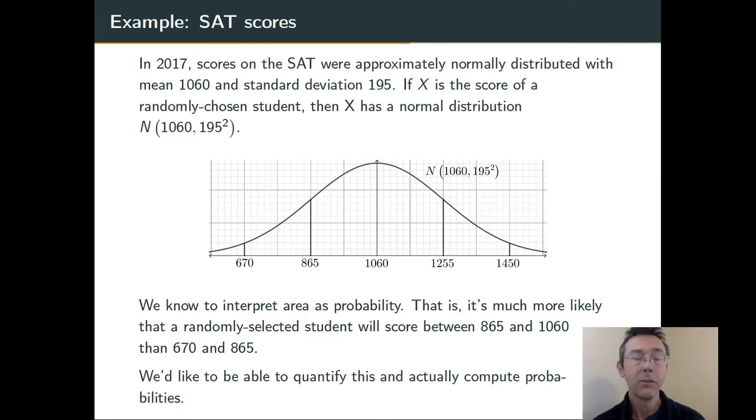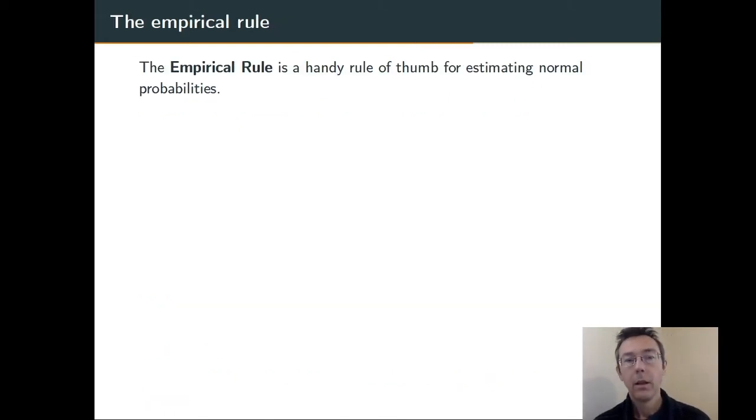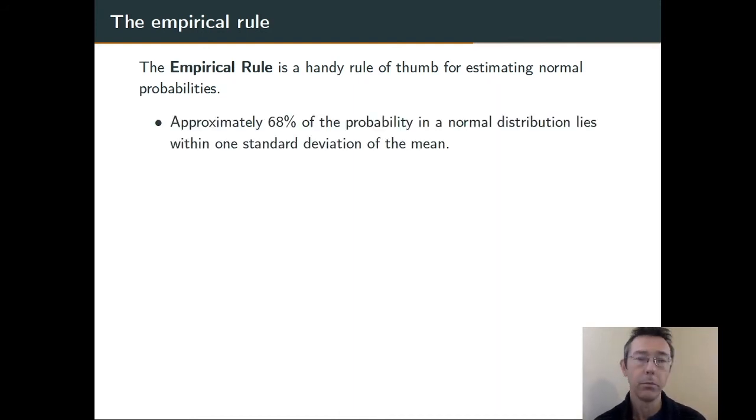We'd like to be more specific. We'd like to be able to actually quantify these probabilities and actually compute them in general situations. The empirical rule is a good rule of thumb for estimating some normal probabilities for particular values. It's a good way to start thinking about probability in normal distributions.